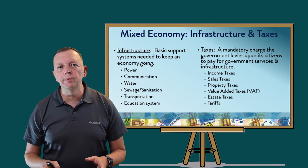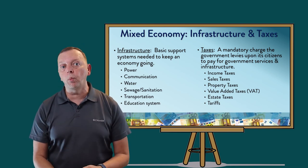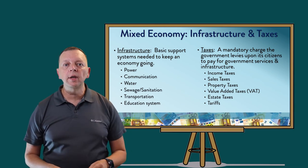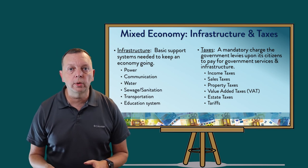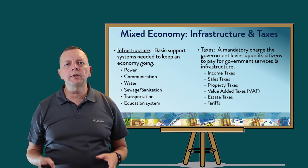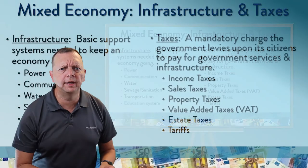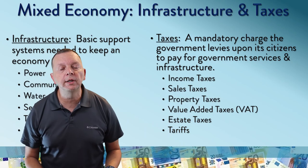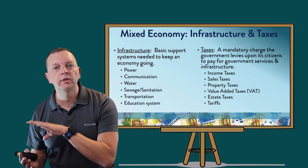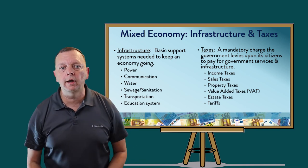Infrastructure is the basic support systems needed to keep an economy going. These are things such as providing power, communication, water, sewage, transportation, and an education system. In order to pay for these things, governments levy a tax — a mandatory charge that the government puts on its people. There are many different types of taxes: income taxes, sales taxes, VAT (value added taxes), property taxes, estate taxes, and even tariffs. These are all money that the government takes from the economy in order to provide for the infrastructure to keep the economy going.